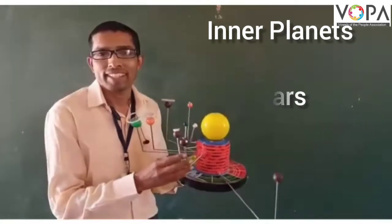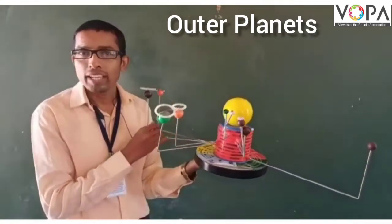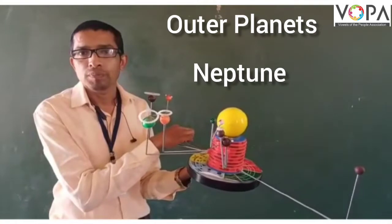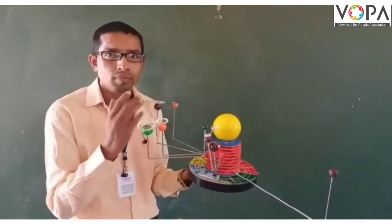The Jupiter, Saturn, Uranus and Neptune are the outer planets. Outer planets have a ring.